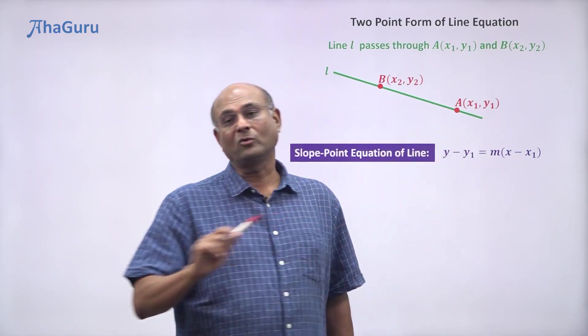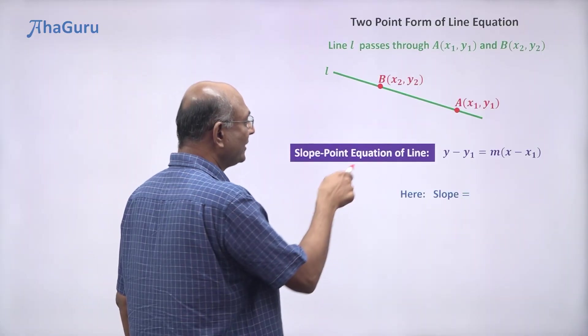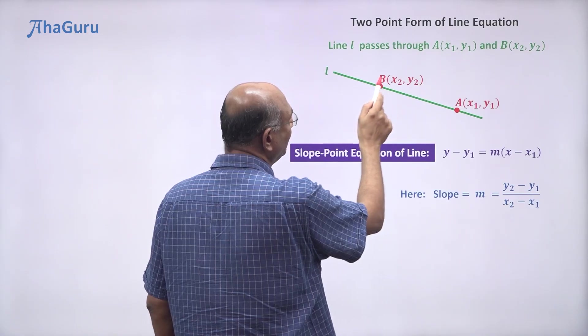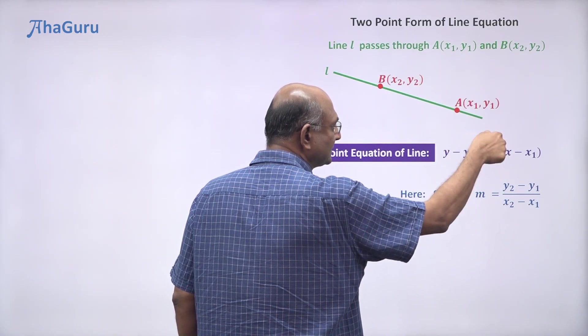What we don't know is m, but once I know two points you can always find m, right? So here the slope m is (y₂ - y₁)/(x₂ - x₁).